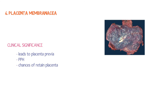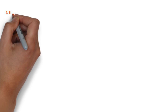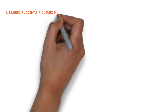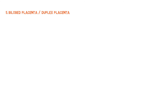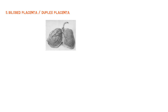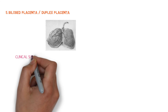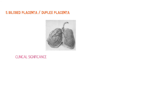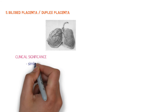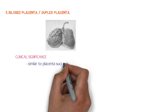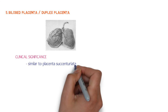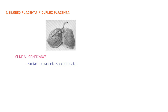Placenta bilobate or duplex placenta: here the umbilical cord is attached like a connecting bridge between the two placental lobes. Multilobate placenta may also develop in some conditions, and the lobes may be of equal sizes. The clinical significance is similar to that of placenta succenturiata, with the same complications, diagnosis, and treatment.